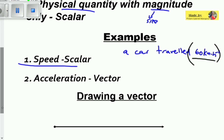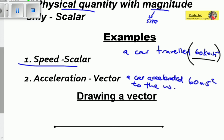We have acceleration as our second example. Acceleration depends on the direction, so it contains both magnitude and direction. Acceleration is basically the rate of change of velocity, or rate of change of speed in general terms — how fast did the speed change and in what direction. For example, you can say a car accelerated at 60 meters per second squared to the west. So acceleration depends on direction; a car cannot just accelerate randomly — it accelerates in a certain direction. Therefore, acceleration is regarded as a vector.